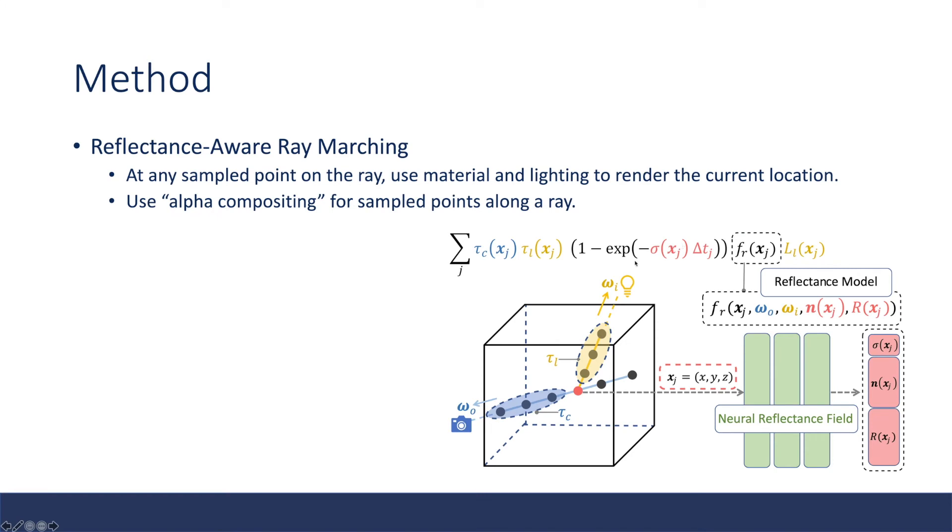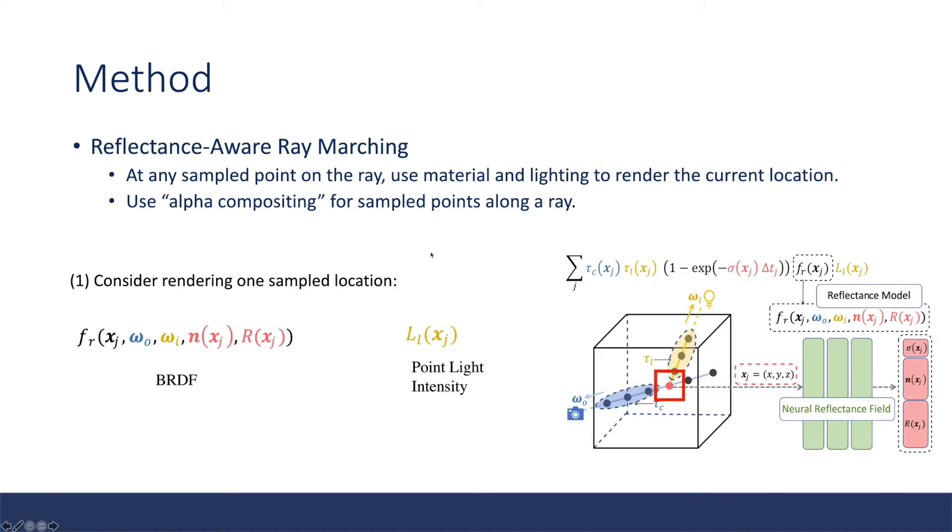The next thing is how we can differentially render this neural reflectance field into an image. The authors propose reflectance-aware ray marching. There are basically two stages. First, at any sampled point on the ray, we use material and lighting to render the current location. Then we use alpha compositing to composite the sample points along a ray.